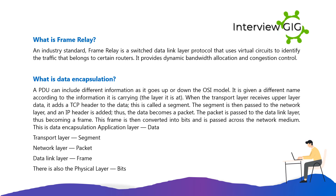What is data encapsulation? A PDU can include different information as it goes up or down the OSI model, and is given a different name according to the information it carries. The transport layer adds a TCP header to the data, creating a segment. The segment is passed to the network layer where an IP header is added, making it a packet. The packet is passed to the data link layer, becoming a frame. The frame is converted into bits and passed across the network medium.